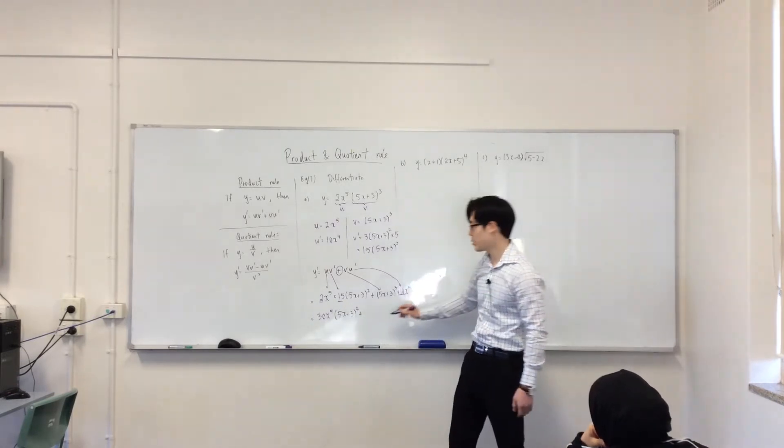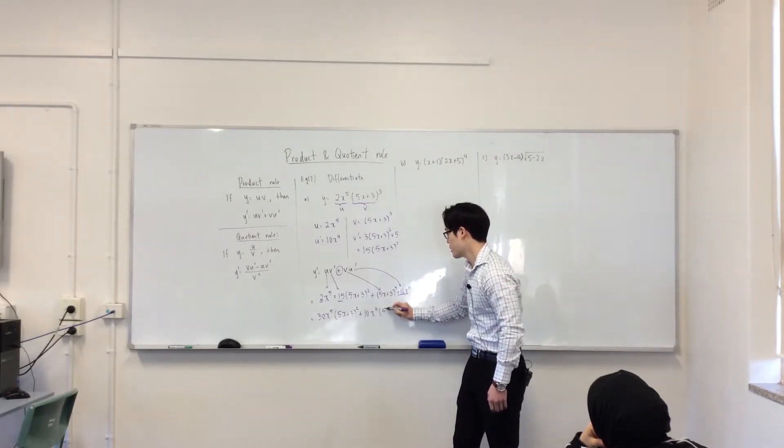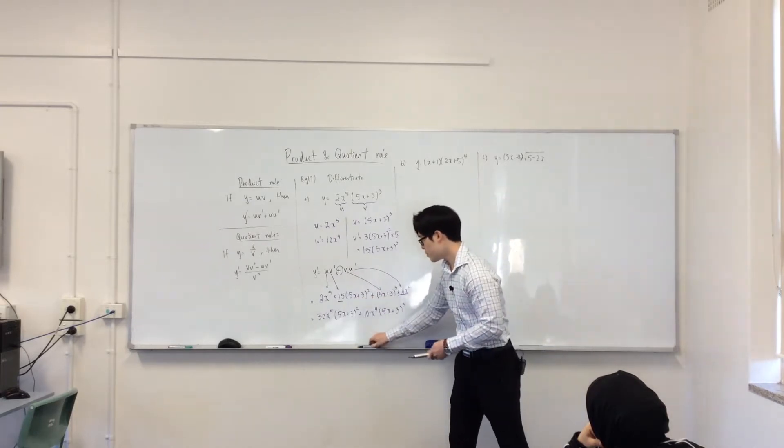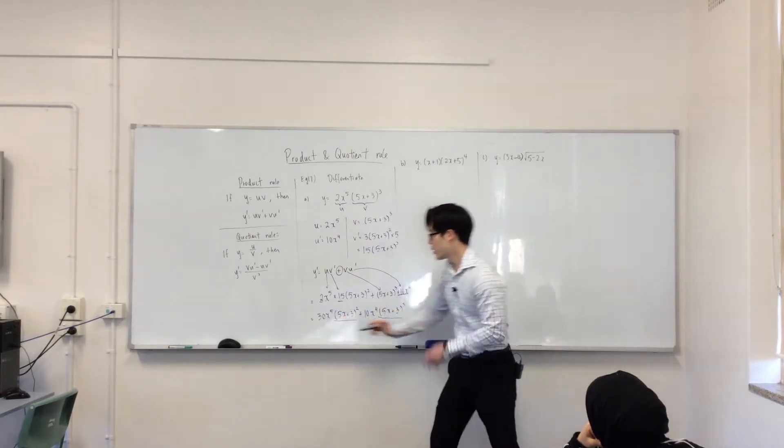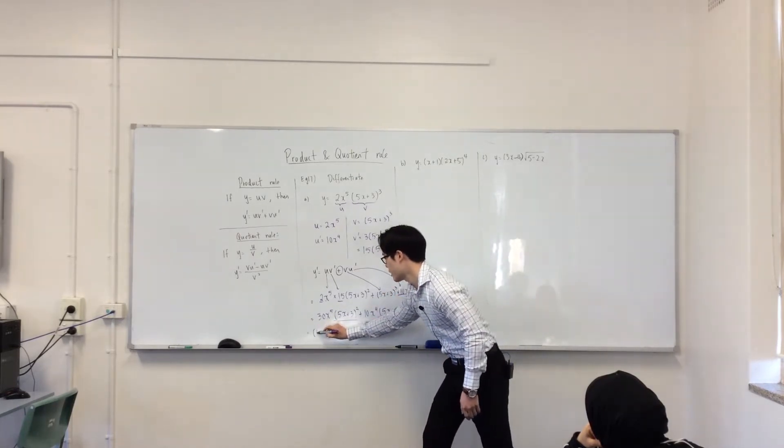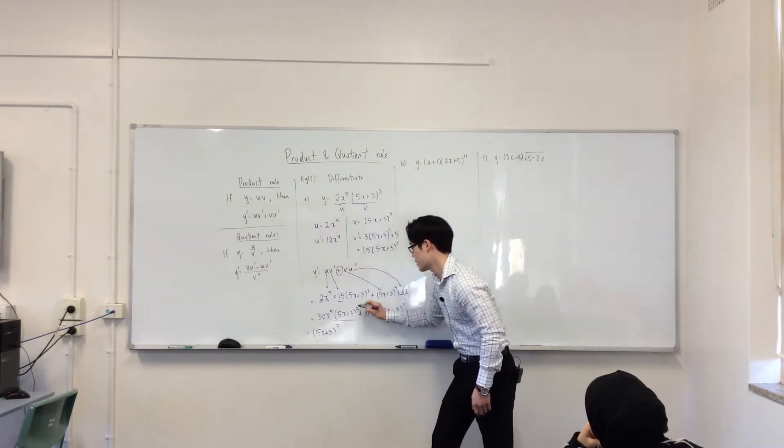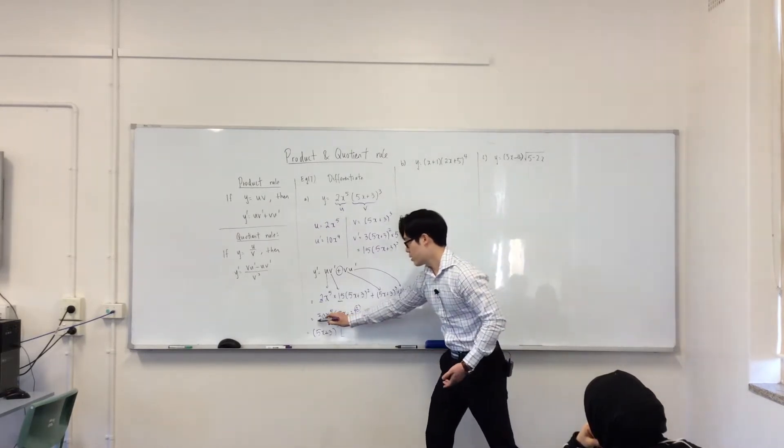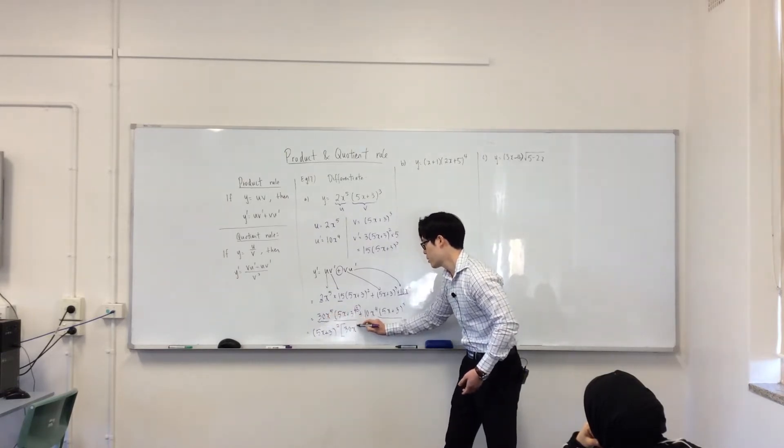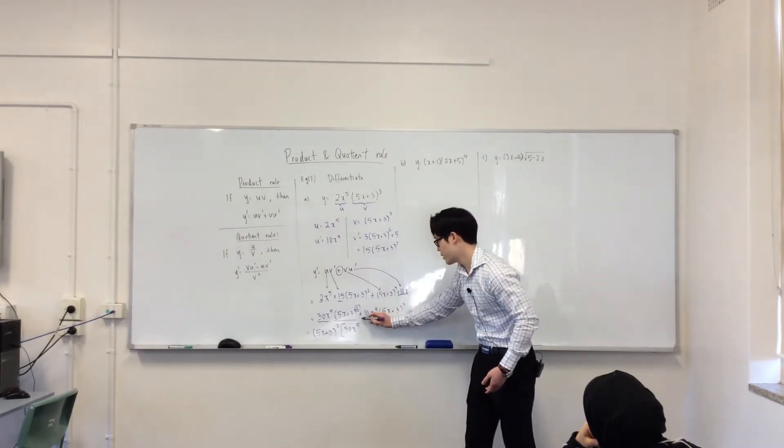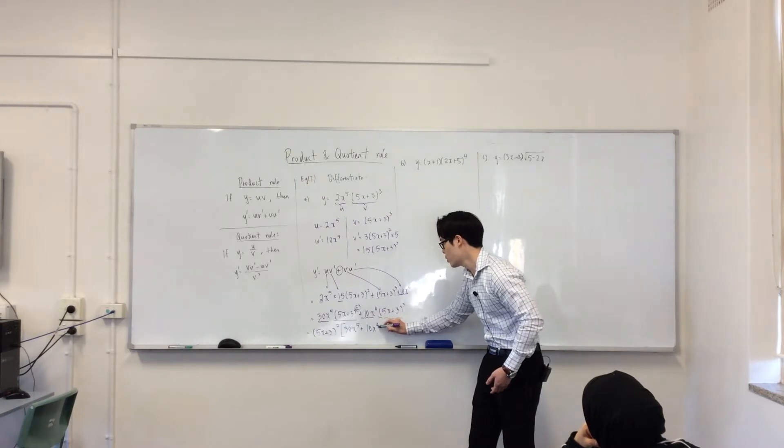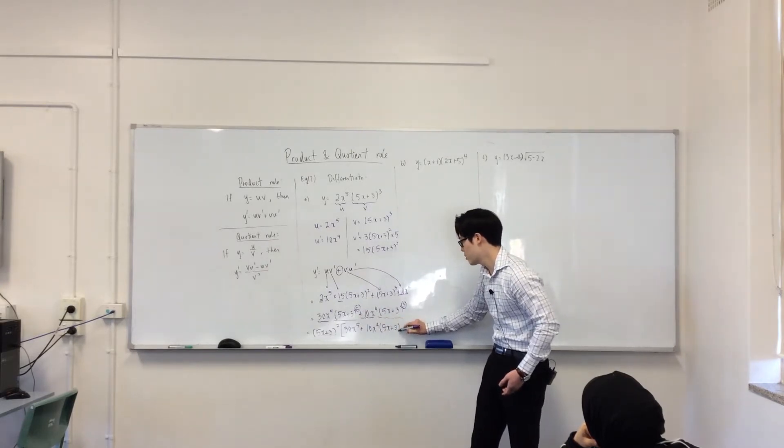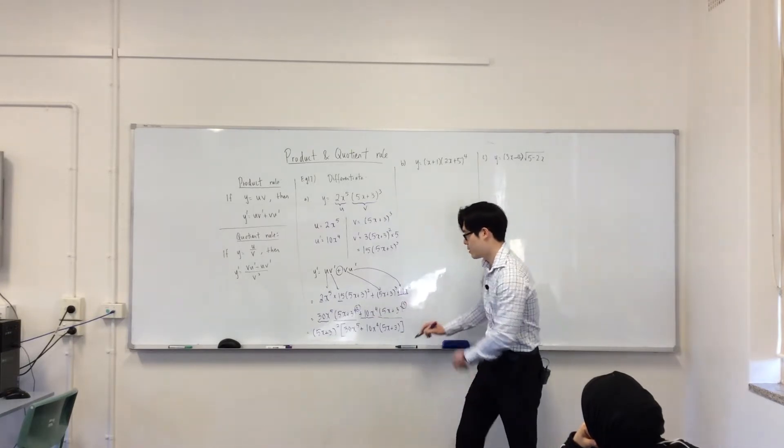Let me simplify this now. 2 times 15 is 30x^5(5x + 3)^2 plus, see how it's just 10x^4 multiplied, so just put that out in front of the bracket. Now, typically you don't just write it like this. We want to further simplify and make it look neater. What's common between these two terms? If I was to factorize it, the highest common factor would be not just 5x + 3, but to the power of 2 because that's the lower power of these two. Now, factorize it out.